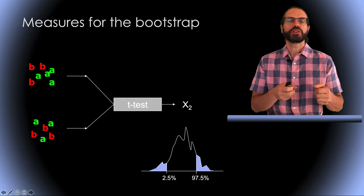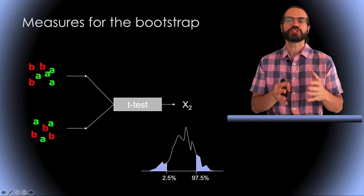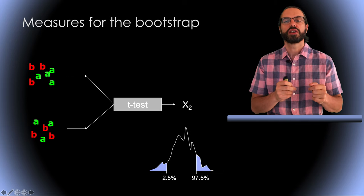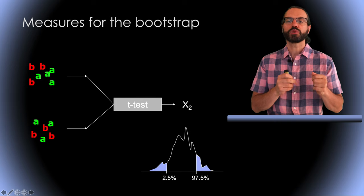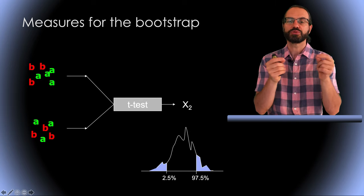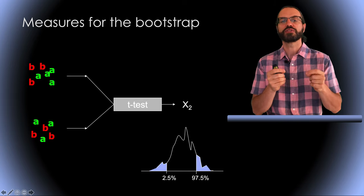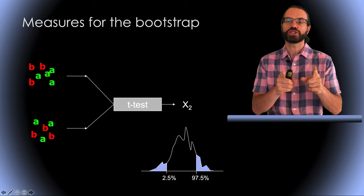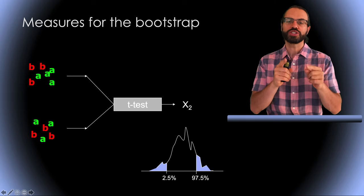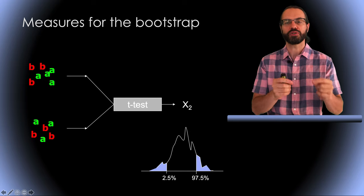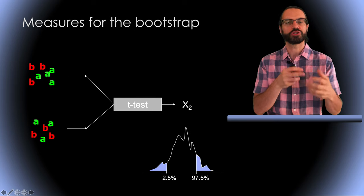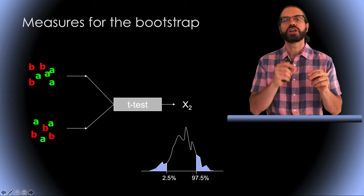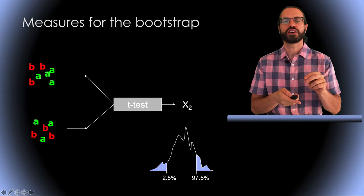Note that we have been using the mean and difference here. However, there is no limitation to the type of measure you can use for Bootstrap. For example, we could very well use the t-test as a measure of distance between sets of values instead of using the average difference. Now, the t-test is only used as a measure to assess the distance. We do not compare the t-test value to the t-test table as we would do for parametric statistics. Instead, we compare the t-test value to the null distribution of t-test obtained using Bootstrap.